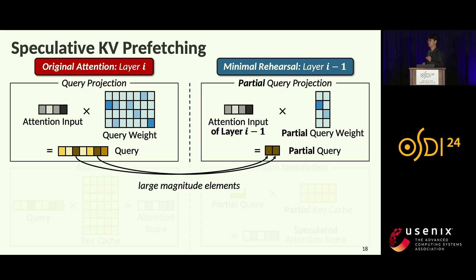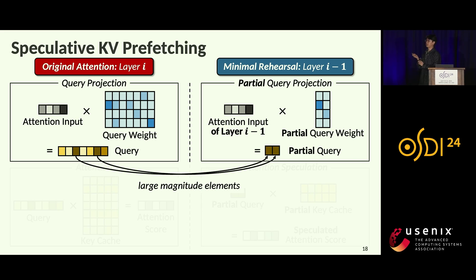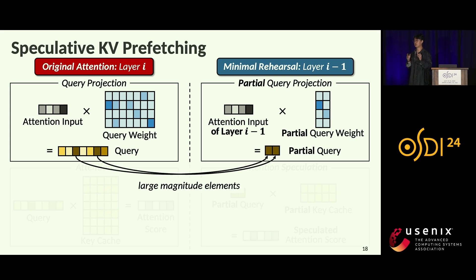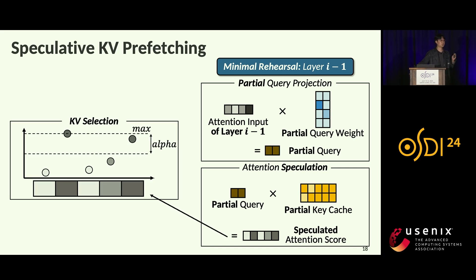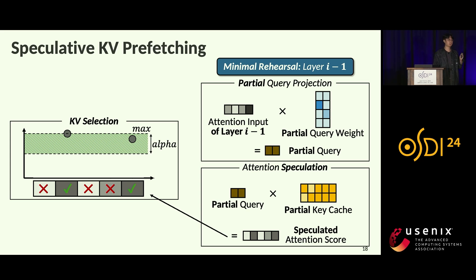We multiply the attention input with only a few columns of the query weight to reduce prediction overhead, selecting columns that generate large-magnitude elements in the query. Since these elements have a great impact on the dot product between query and key, we can properly approximate attention computation with them. We then multiply the partial query and partial key cache to generate a speculated attention score, and select tokens with attention scores above a threshold. In this way, InfiniGEN selects only an essential — not fixed — amount of tokens.